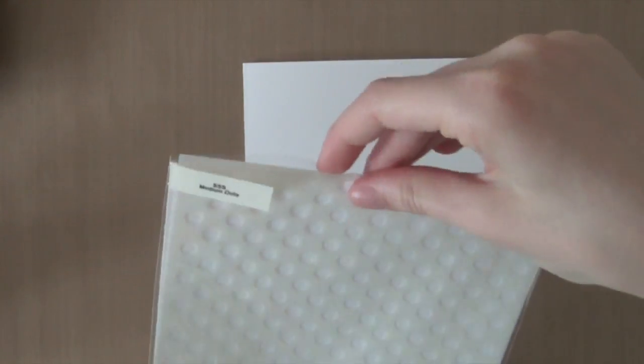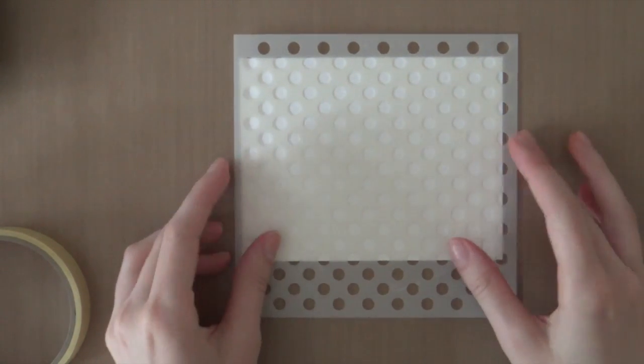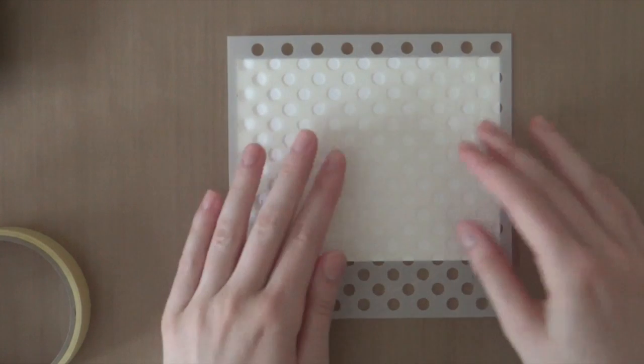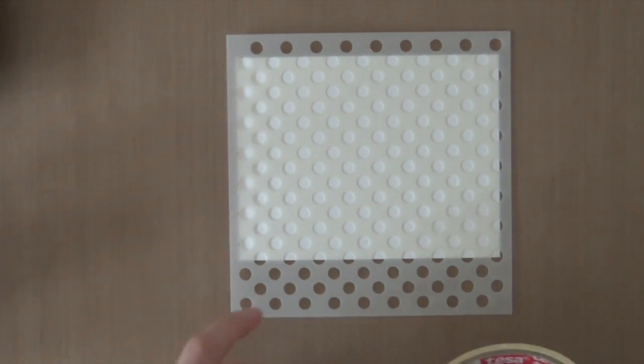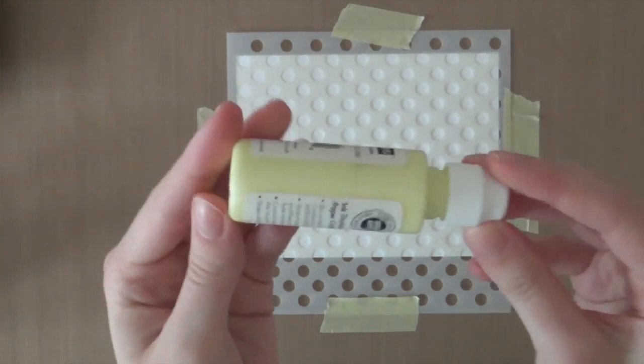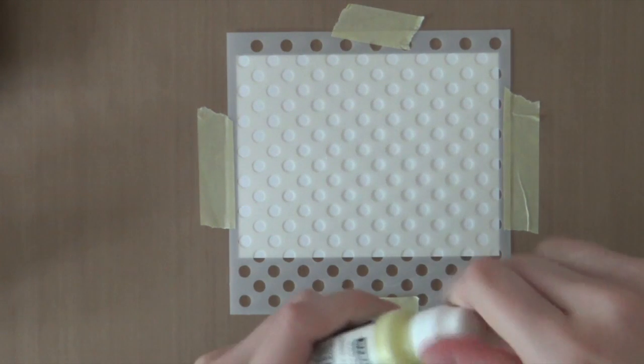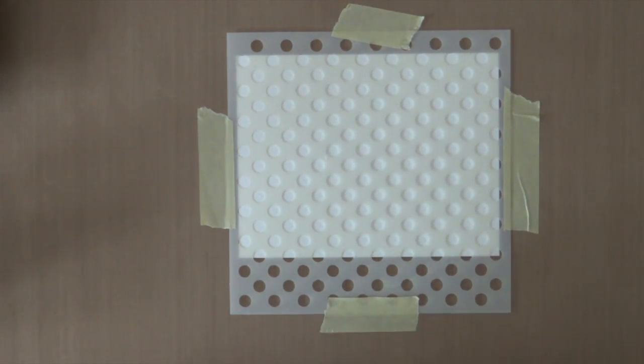Some heavyweight cardstock. And I'm going to use the Simon Says Stamp medium dots stencil. So I'm going to adhere this temporarily using some painter's tape again. And now I'm going to use a Hero Arts ink dauber. And this is the pastel yellow color. So first I'm going to shake this.